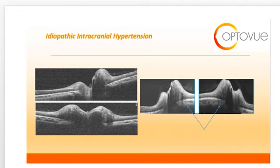This is another slide of disc edema as a result of idiopathic intracranial hypertension. On the left-hand side, you can see the smooth internal contour that we discussed in previous slides.